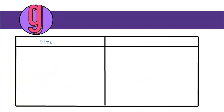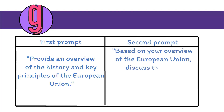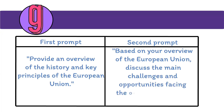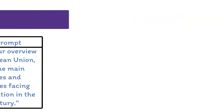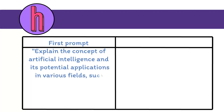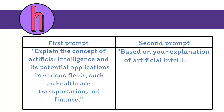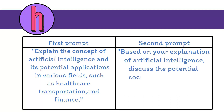G. First prompt: Provide an overview of the history and key principles of the European Union. Second prompt: Based on your overview of the European Union, discuss the main challenges and opportunities facing the organization in the 21st century. H. First prompt: Explain the concept of artificial intelligence and its potential applications in various fields such as healthcare, transportation, and finance. Second prompt: Based on your explanation of artificial intelligence, discuss the potential social, economic, and ethical implications of widespread AI adoption.